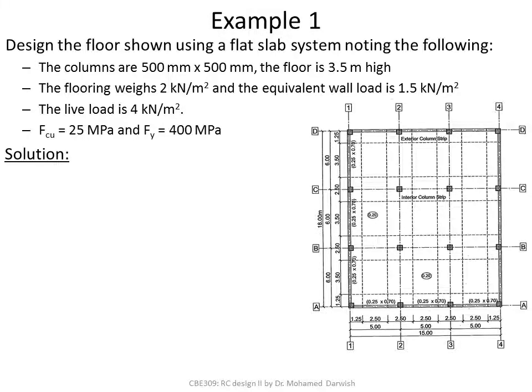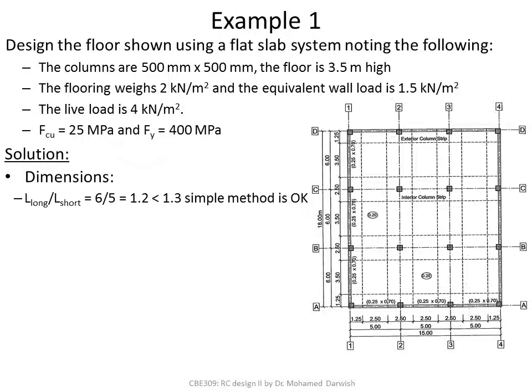Let's work through an example. This flat slab system has columns of 500 × 400 mm, a floor height of 3.5 m, flooring weight of 2 kN/m², equivalent wall load of 1.5 kN/m², live load of 4 kN/m², Fcu = 25 MPa, and FEL = 400 MPa. Starting with dimensioning: the ratio of 6 m to 5 m spans is 1.2, which is within 1.3, and all spans are equidistant, so the simplified method is applicable.